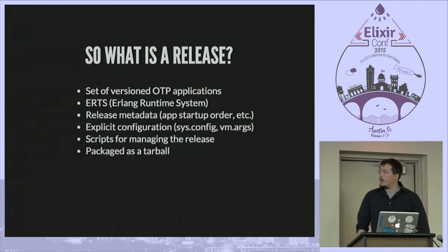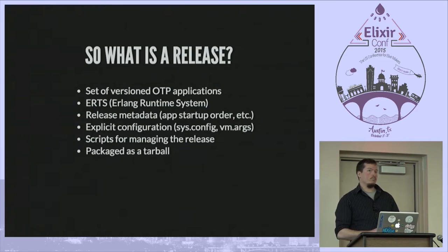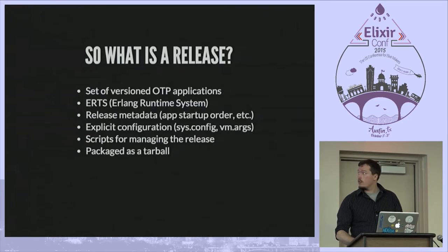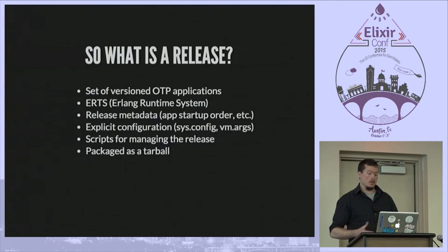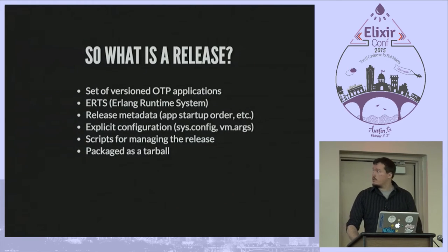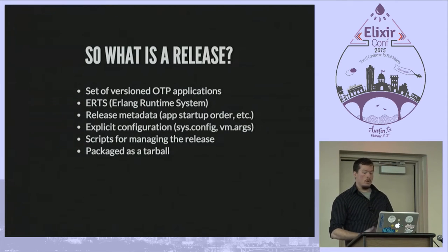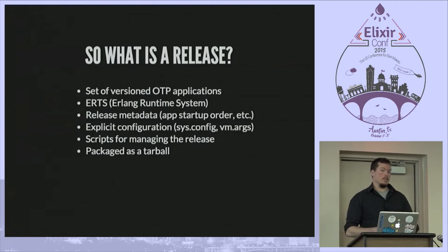So what exactly is a release? It's a set of versioned OTP applications — not rough dependency versions, but explicit exact versions of all your applications and their dependencies. This is not just your application and its direct dependencies, but also all transient dependencies including Erlang and Elixir applications. It has the Erlang runtime system included, and contains release metadata on how to start your application — meaning in what order applications are started up and shut down. There's an explicit configuration mechanism: the sys.config, which is what config.exs is ultimately compiled into.